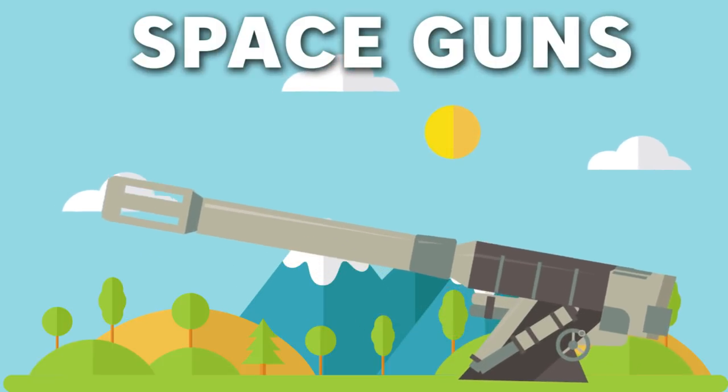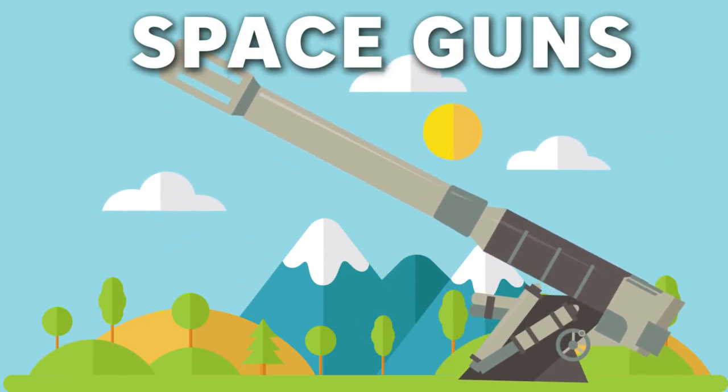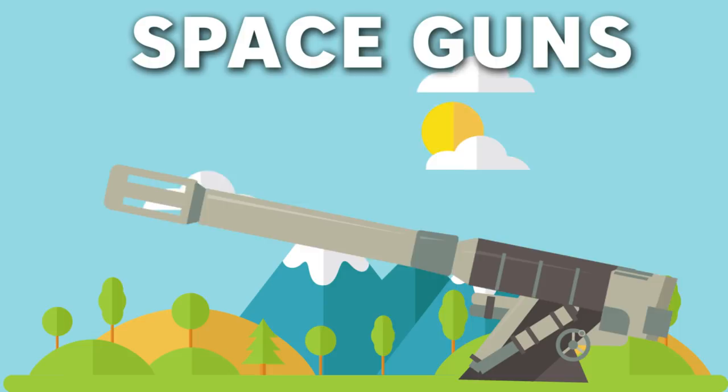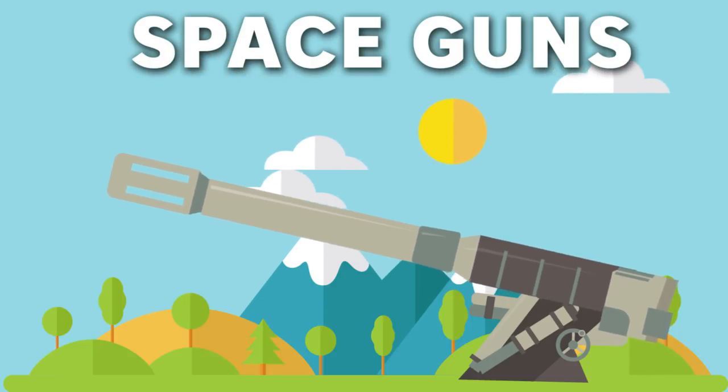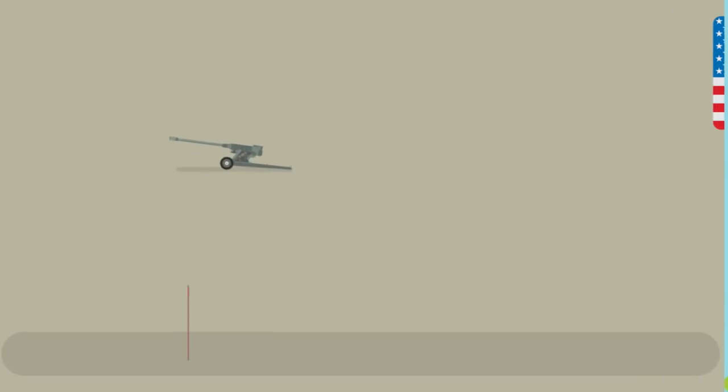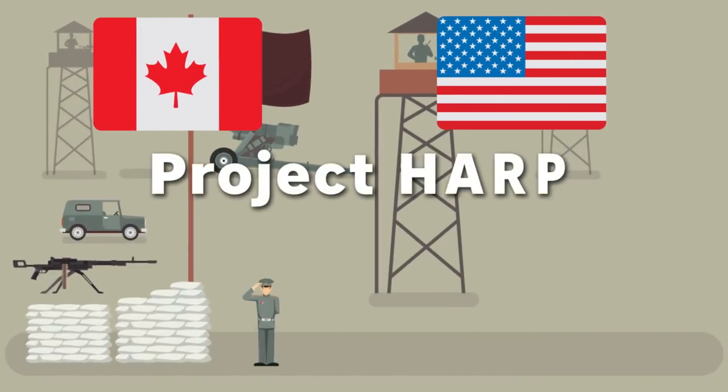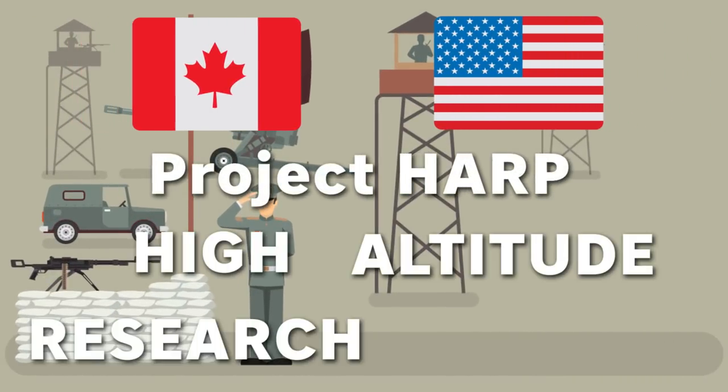It's been claimed by loading a satellite or spacecraft into the barrel of a gun and aiming it upward, we could put objects into space for a fraction of the cost of a satellite. In 1961, the US and Canada jointly created a project called HARP, High Altitude Research Project.